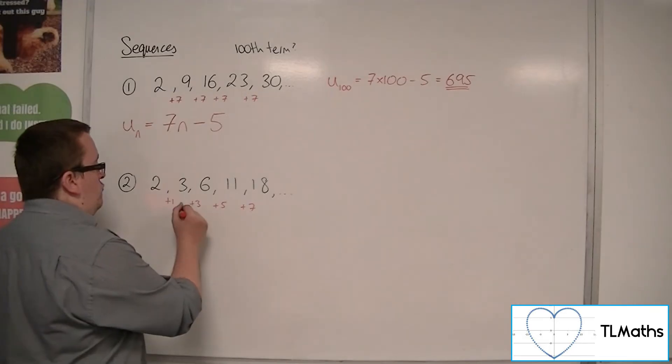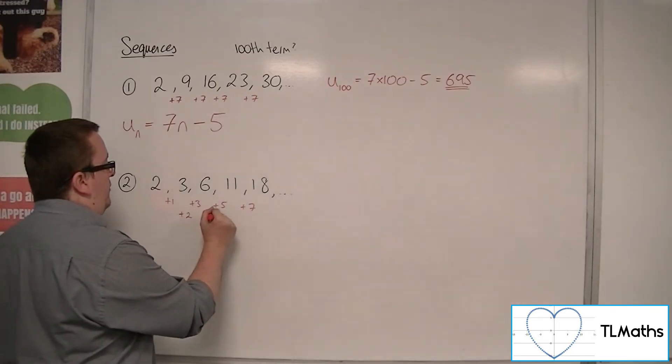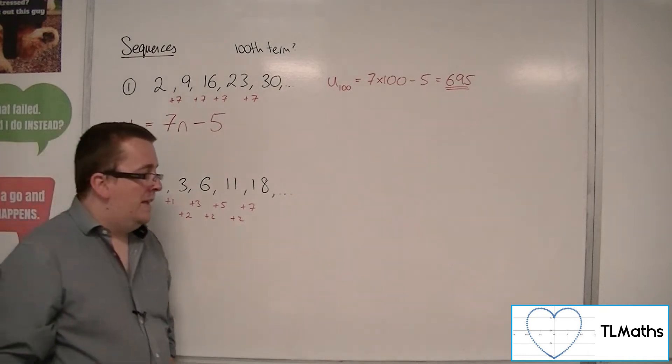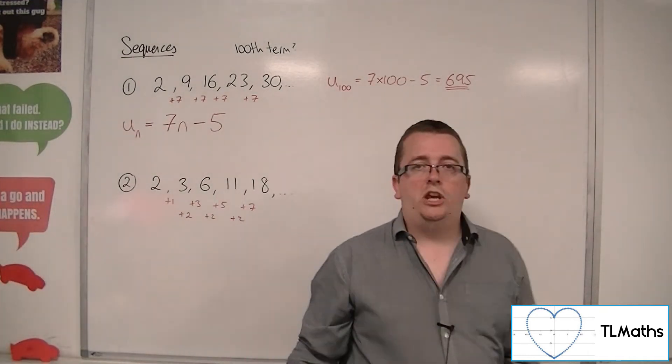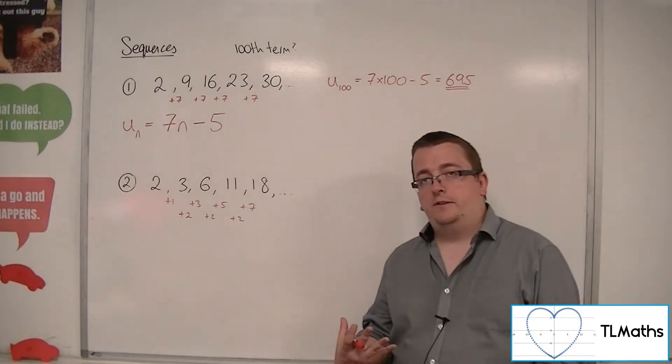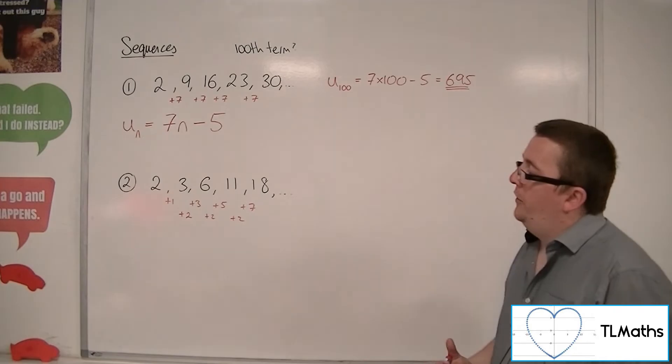So we go into another row and say, well, this is going up in 2s, because we've got 1, 3, 5, 7, they're going up in 2s. And that row being 2 meant that there would be an n squared as part of the nth term.